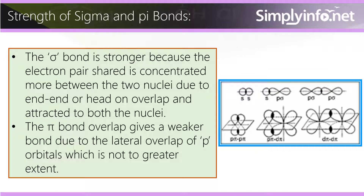The sigma bond is stronger because the electron pair shared is concentrated more between the two nuclei due to end-to-end or head-on overlap, attached to both nuclei. The pi bond gives a weaker bond due to the lateral overlap of p orbitals, which is not to a greater extent.